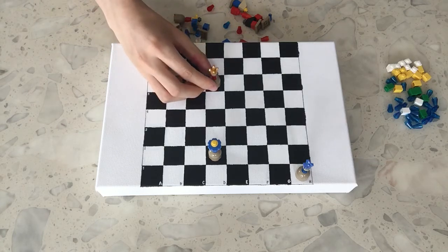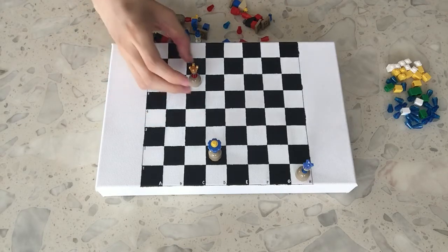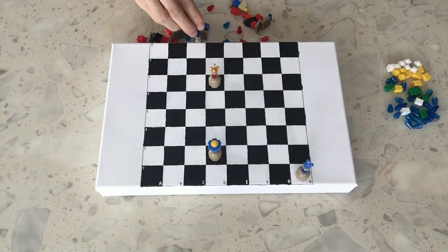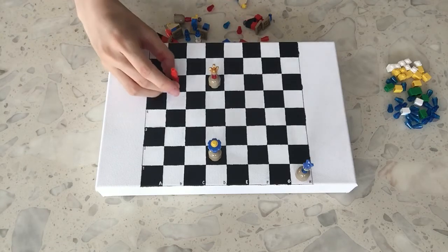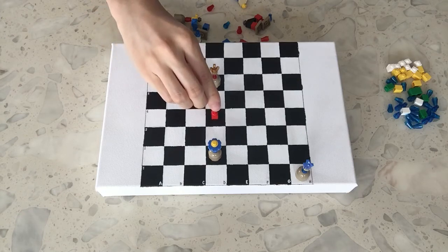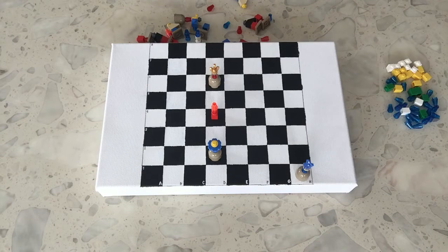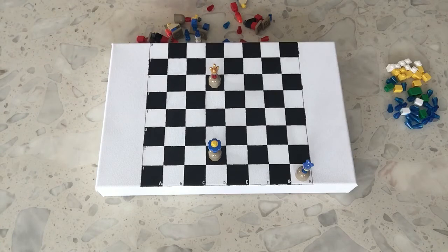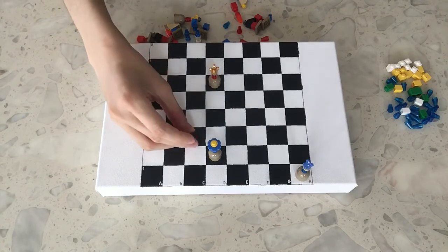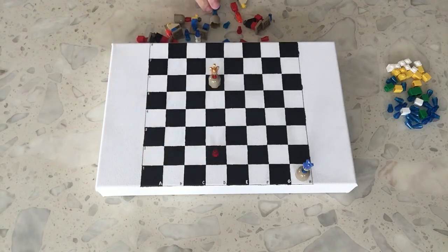You either move your king out of the attacking range like that, or block the path of the attacking piece with another piece like that. So then the king is now safe. Or actually, the third way is capture the attacking piece that's threatening your king. So that's three ways of getting out of check.